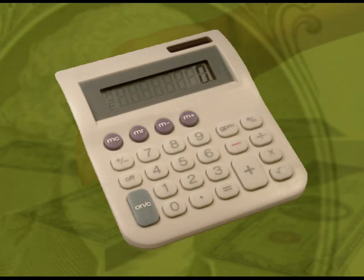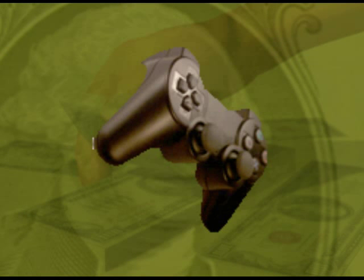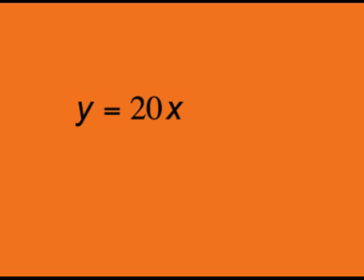Let's look at an example. Suppose a company sells a product for $20. The linear function y equals 20x can be used to track sales, where x represents the number of units sold.